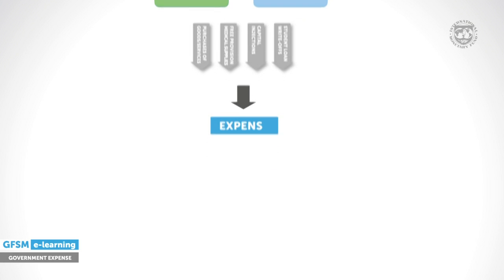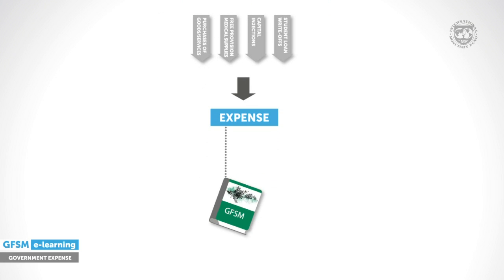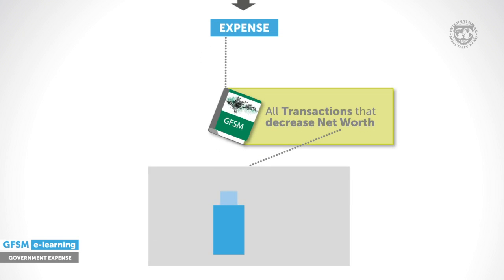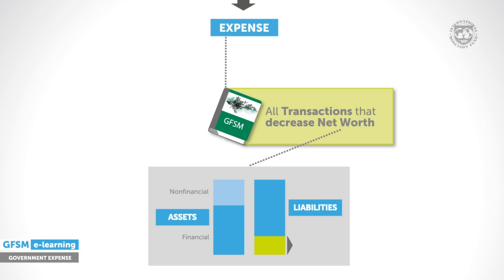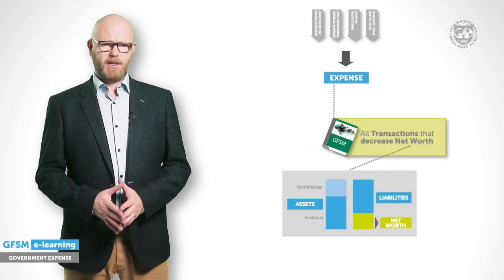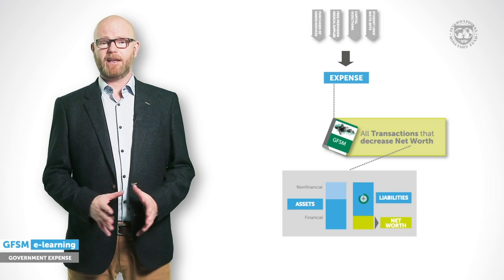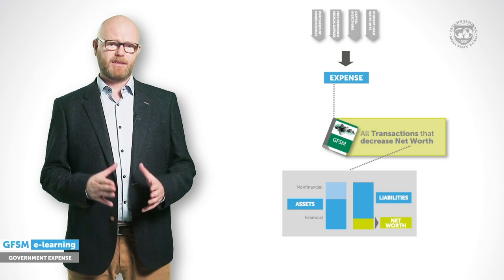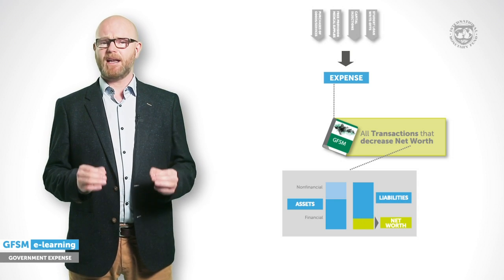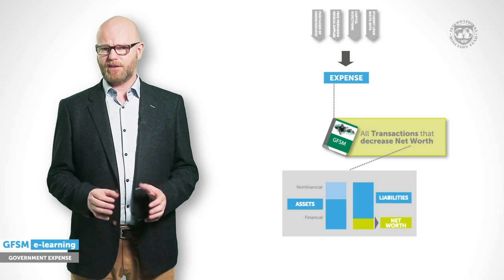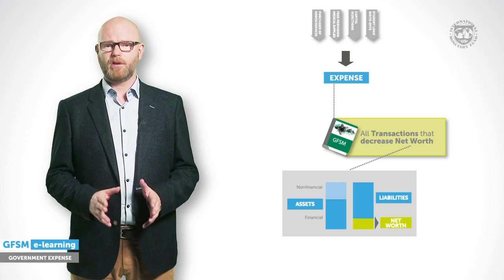The GFSM definition of government expense will help. Expense refers to transactions that lead to decreases of net worth. Net worth is equal to total assets minus total liabilities. Financing or investment do not affect net worth. This means expense reduces the value of government assets or adds to the value of liabilities. One important caveat is that expense only results from transactions with other parties. Holding losses, valuation changes, or destruction of assets are not considered expense.